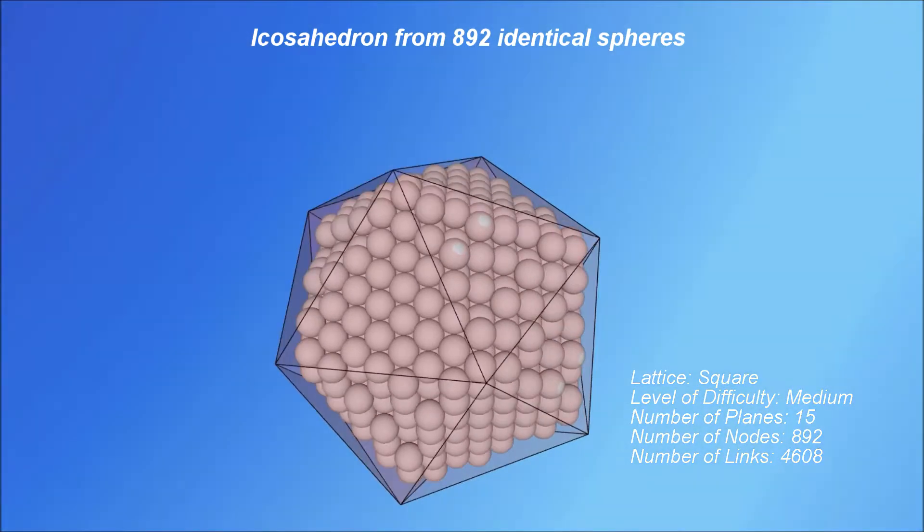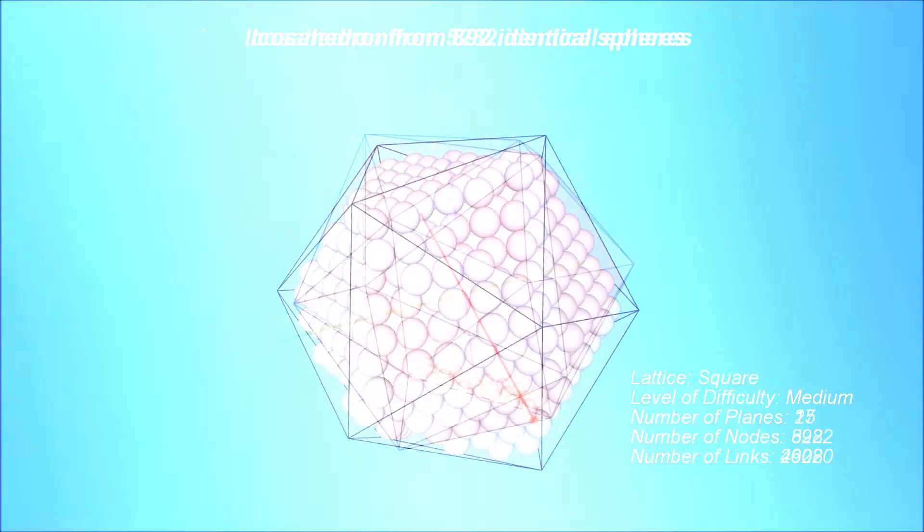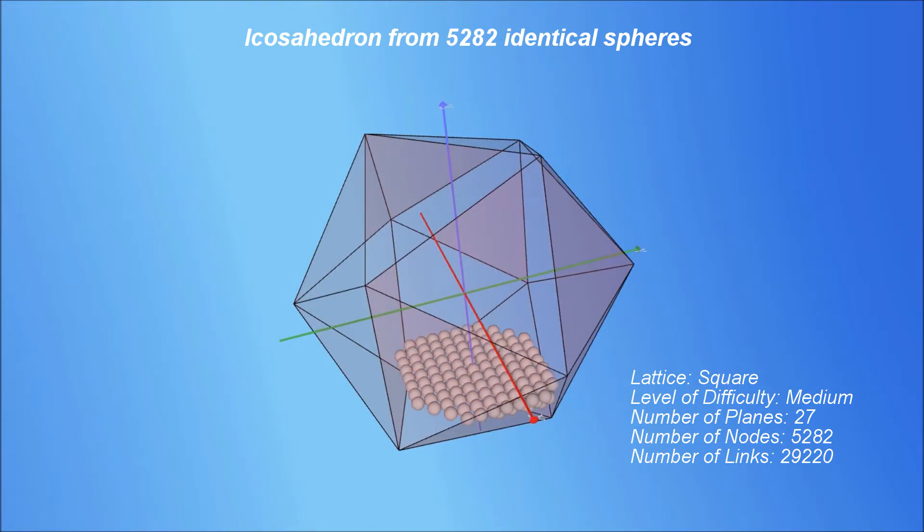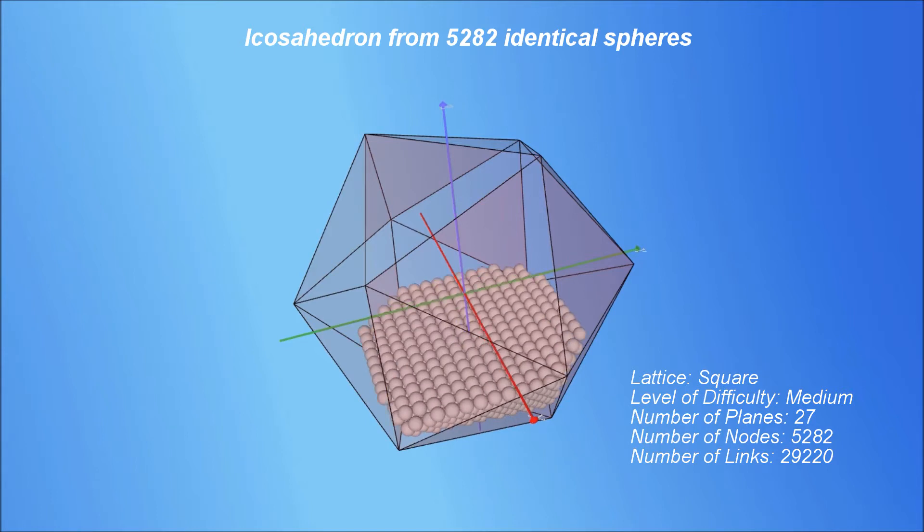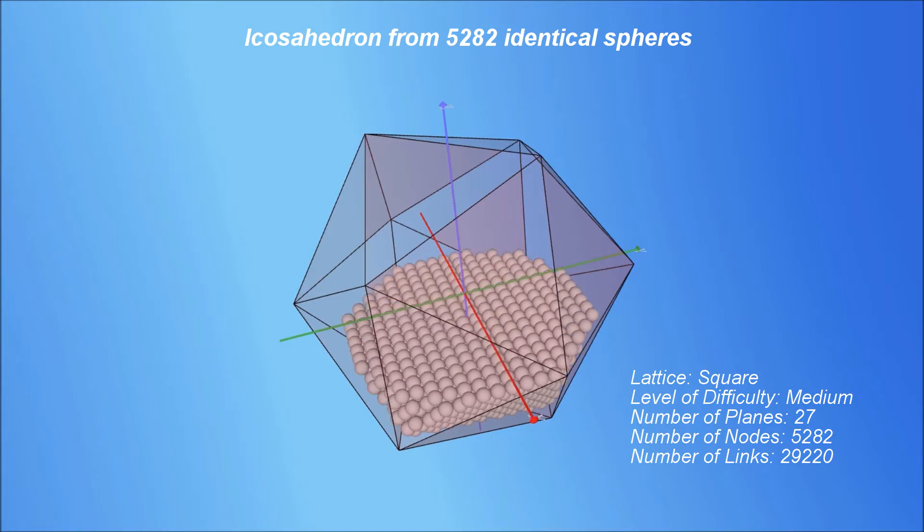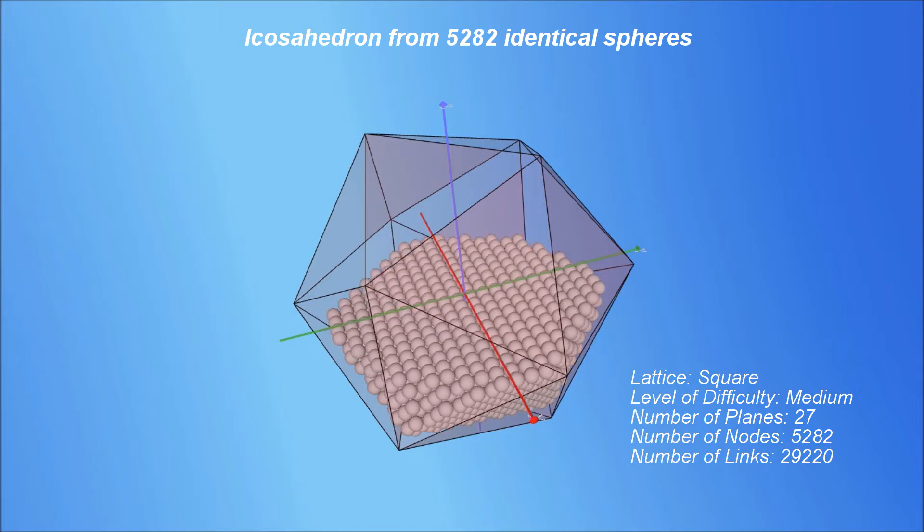The icosahedron does not follow the same rule. To get a reasonable icosahedron shape, one needs a large number of spheres. Let's see two such icosahedrons. First presented here requires 892 spheres and the second one involves 5282 spheres.